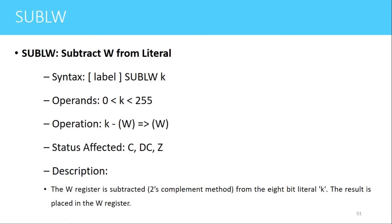The next instruction is SUBLW. This instruction is used to subtract W from the literal value. L stands for literal value, which is the immediate data. The syntax of the instruction is SUBLW K, where K can be any 8-bit value. The operation performed is K minus W — the contents of the working register are subtracted from K and the result is stored in the working register. The flags affected are the carry flag, digit carry flag, and zero flag.